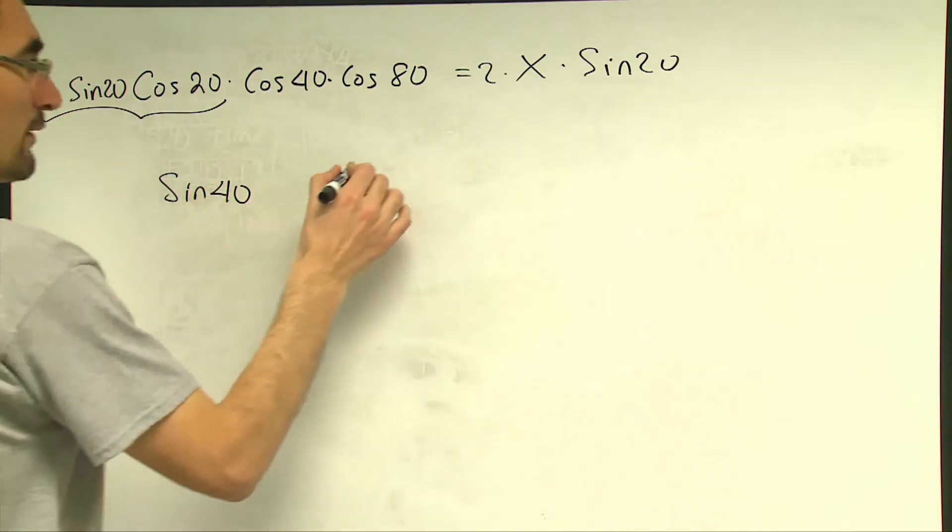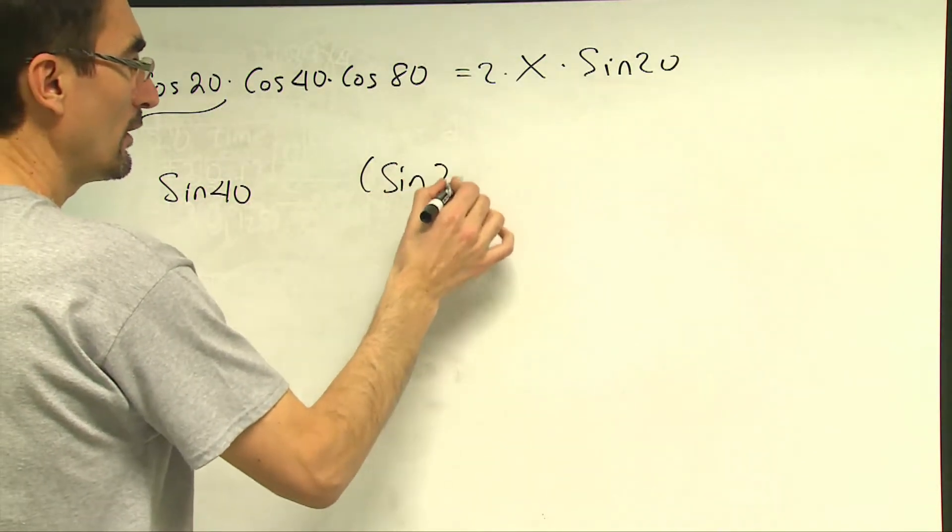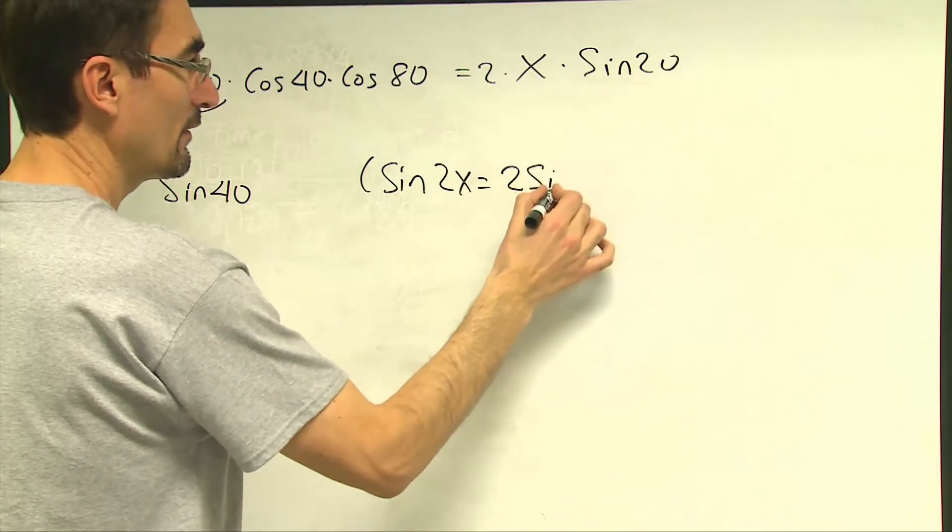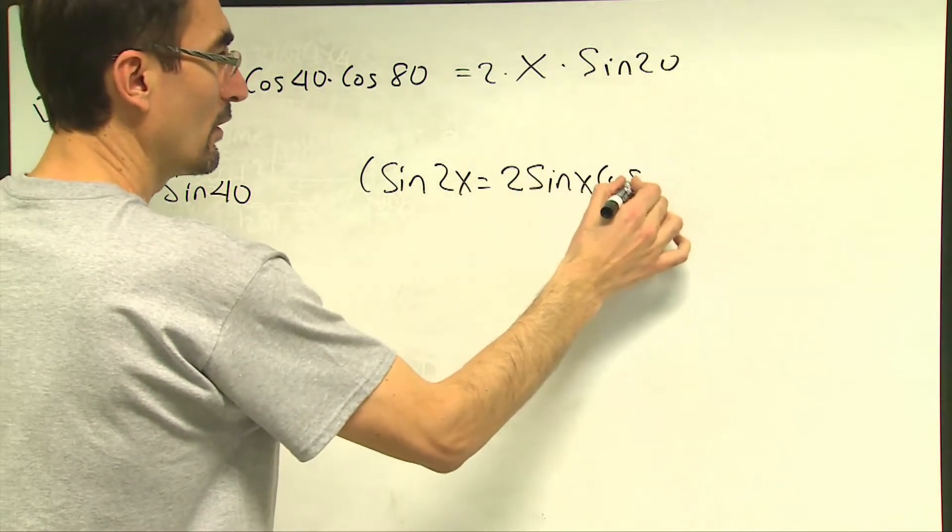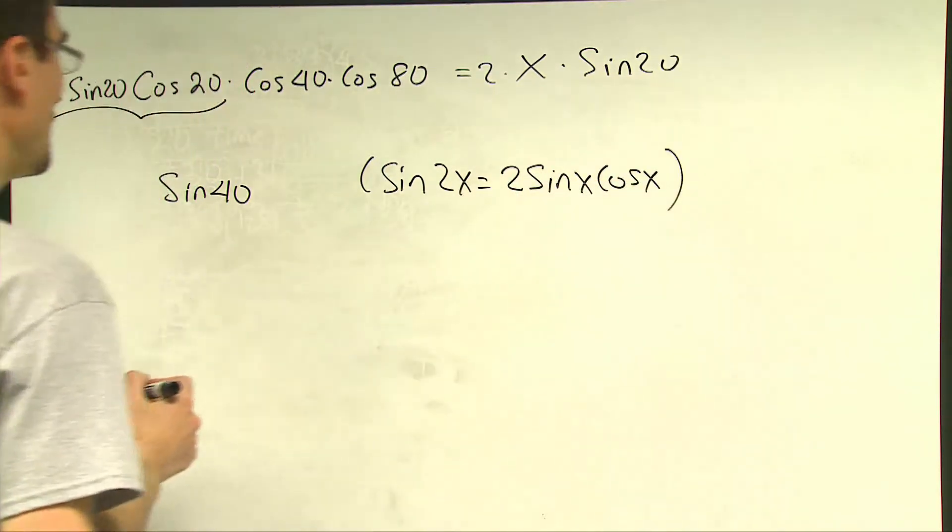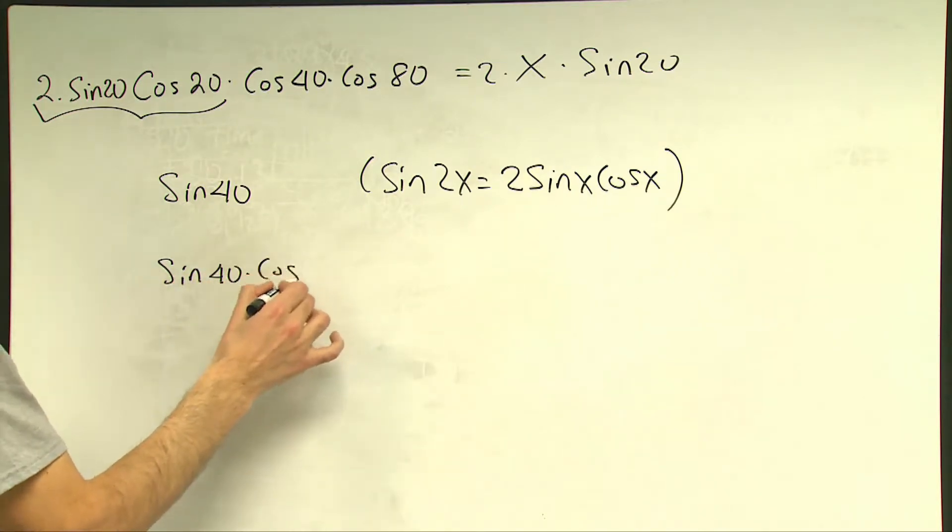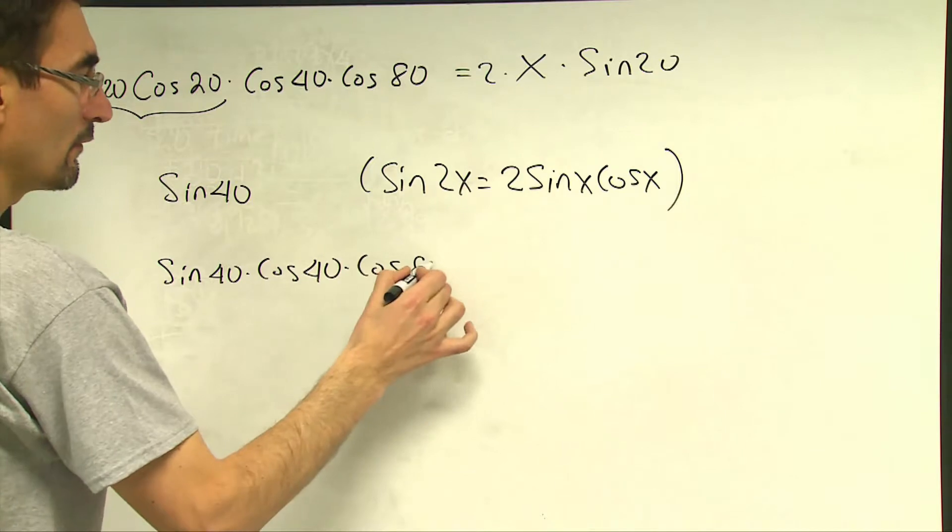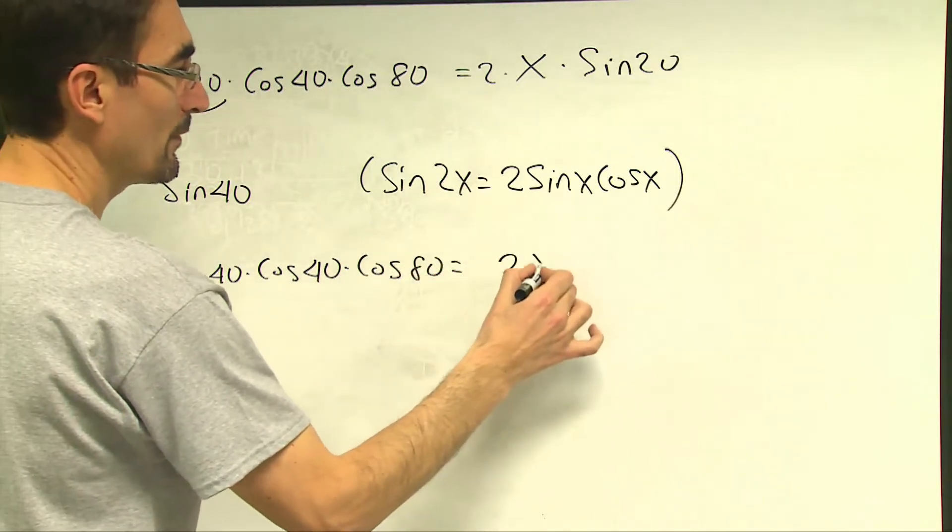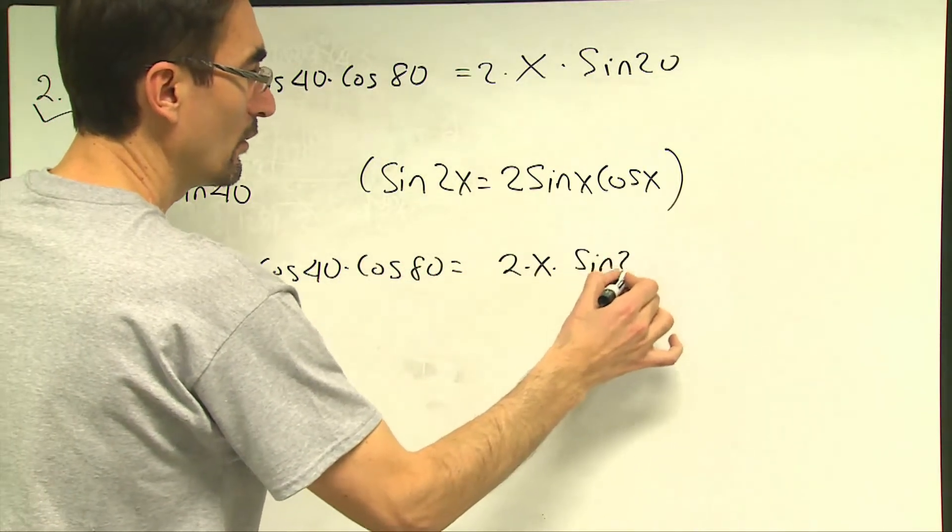It's because sine 2x is equal to 2 times sine x times cosine x. And if I rewrite the whole expression, this becomes sine 40 times cosine 40 times cosine 80 which will be equal to 2 times x times sine 20.